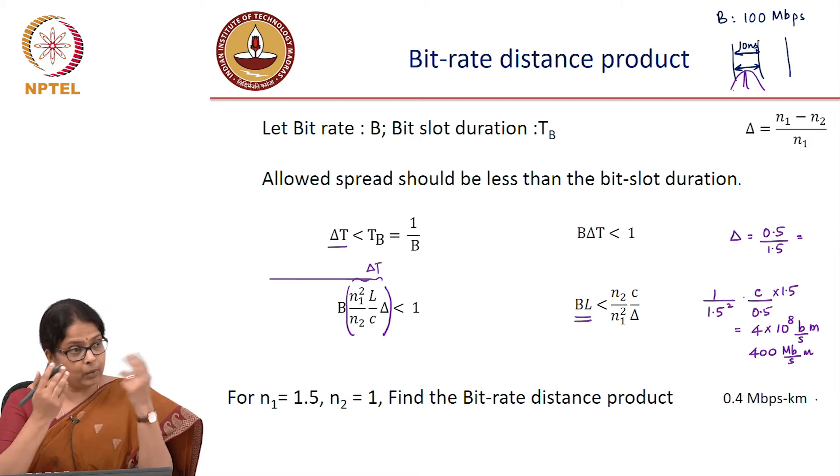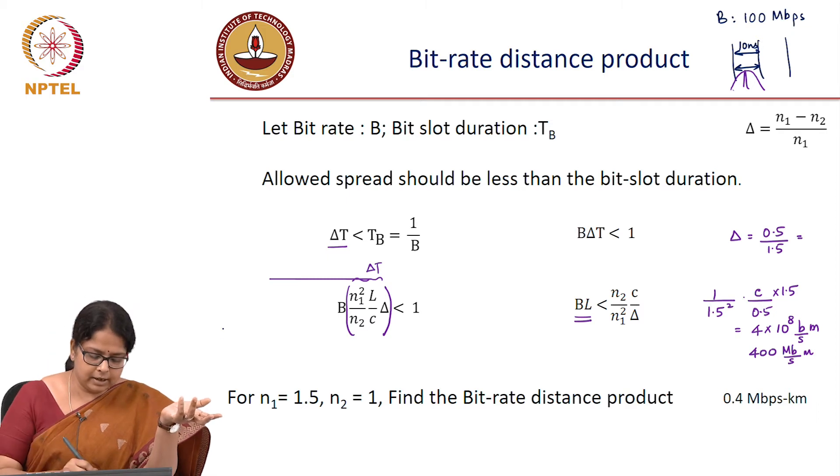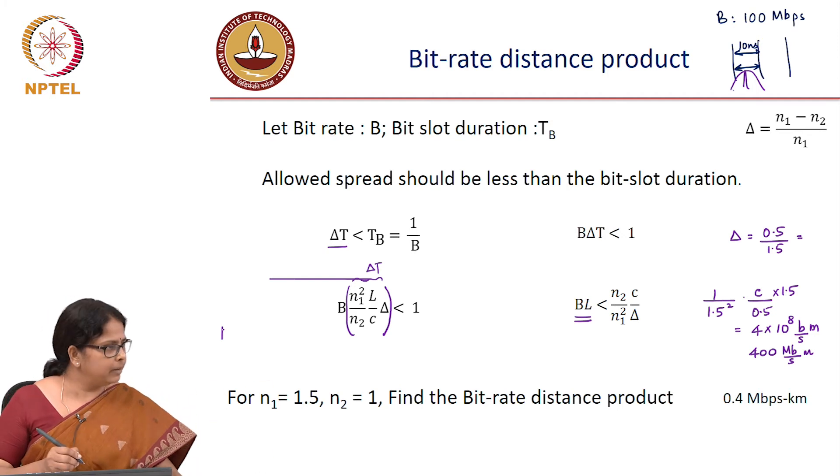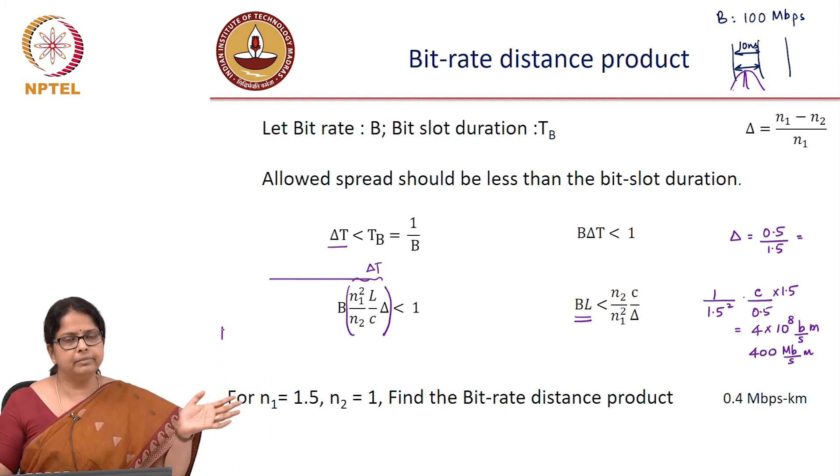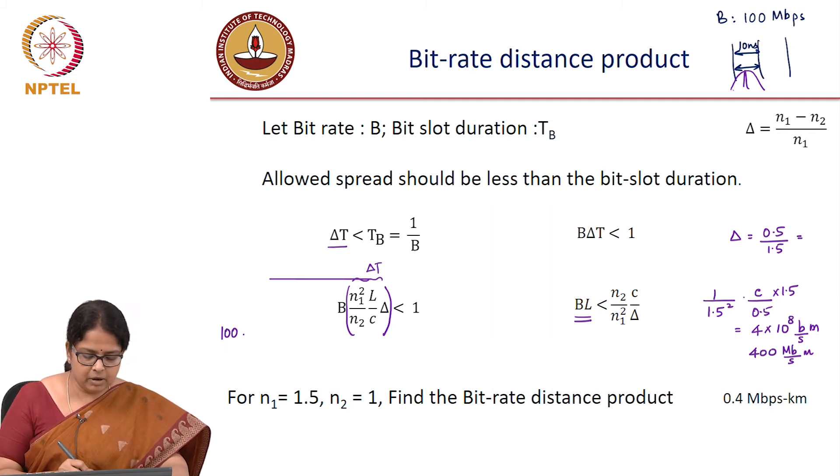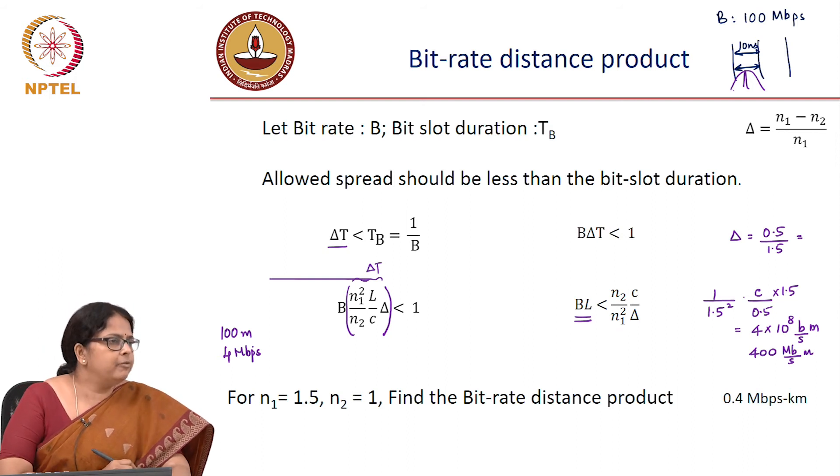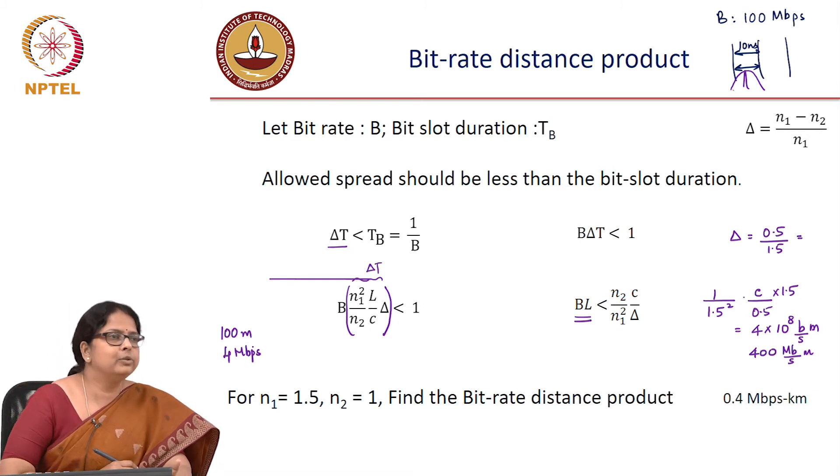So let us say my requirement is a link between the top floor of my building to the bottom floor of my building and I do not think I will go anywhere beyond 100 meter. What is the best bit rate I will get from this system? If I have 100 meter, I will get 4 mbps. 1 kilometer, 1000 meters gave me 0.4. 100 meters will give me 4 mbps. If my requirement is only 1 mbps, I can very well use this system.